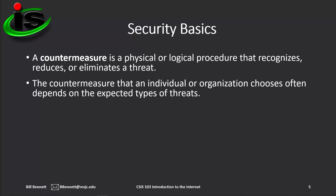When protecting an asset, the countermeasure that individuals or organizations choose often depends on the expected types of threats to the asset and its value. For example, you might hang your jacket on a public coat rack in a restaurant with a low expectation of it being stolen. However, if you store your wallet and keys in the jacket's pocket, you might be less likely to hang it on the public coat rack. The theft would result in a much greater loss than simply losing the jacket. In this case, you're likely to keep your jacket with you at all times as a countermeasure to prevent its loss.